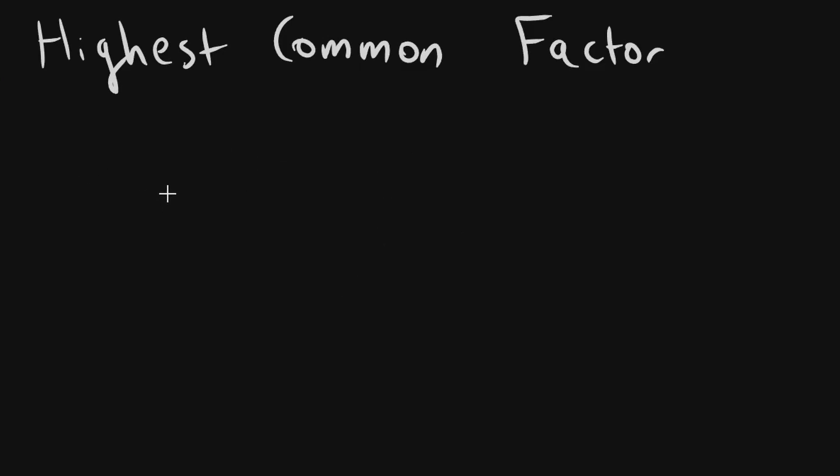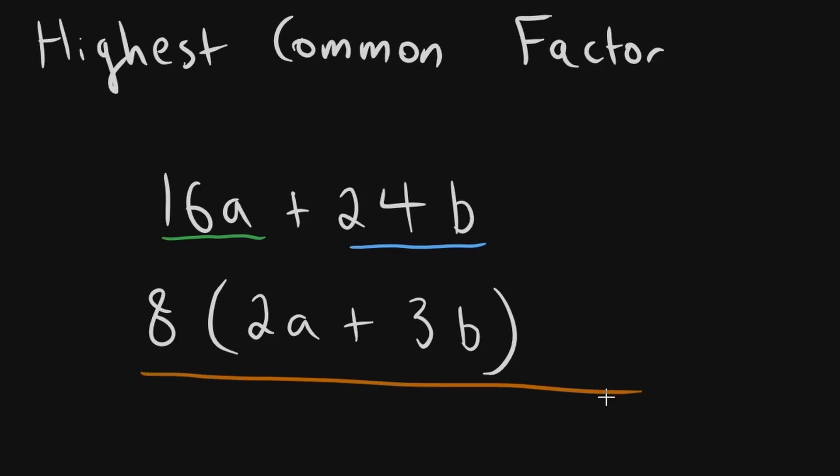Another example would be 16a plus 24b. What is the highest common factor? Well, 8. So you take 8, open a bracket, 8 times by what gives you 16a? Well, 8 times by 2a, plus, and 8 times by what gives you 24b? 3b. And here you have the factorized expression.